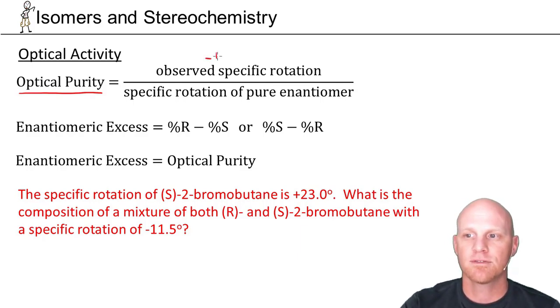Here we've got -11.5°. We want to divide that by the specific rotation of the pure enantiomer. In this case, we can see that the S enantiomer is +23°, which we can imply then that the R enantiomer would be -23°.